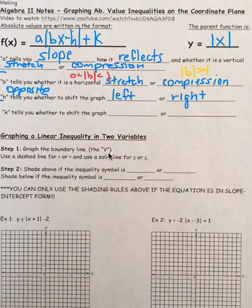On absolute values, the only difference between what happens with a and b is that if your b value is negative or positive, the same thing is going to happen because it's inside the absolute value. Whereas the a value, if it's positive or negative, those are going to reflect.